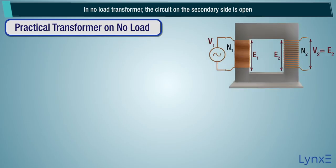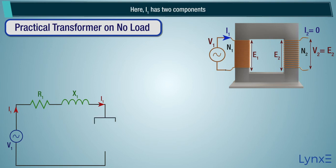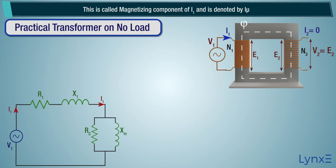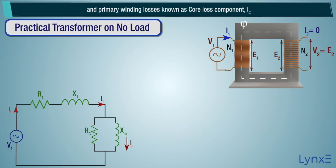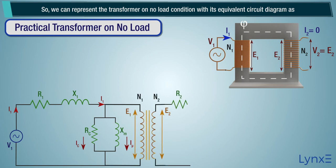In a no load transformer, the circuit on the secondary side is open. V1 is the primary voltage and I1 is the primary current. Here, I1 has two components. One component is responsible for generation of magnetic flux — this is called the magnetizing component of I1, denoted by I mu. The second component is responsible for magnetic losses, that is hysteresis and eddy current losses, and primary winding losses, known as the core loss component IC.